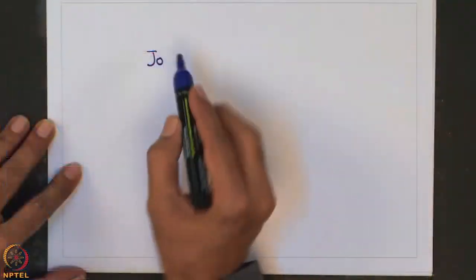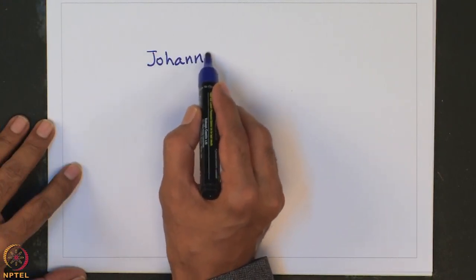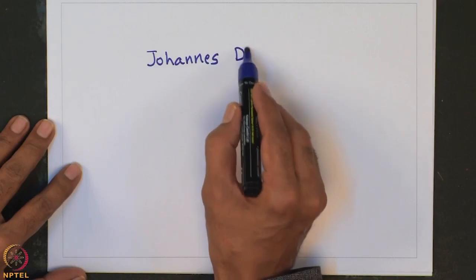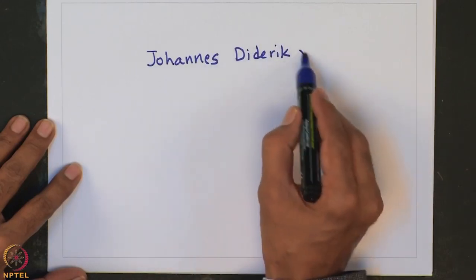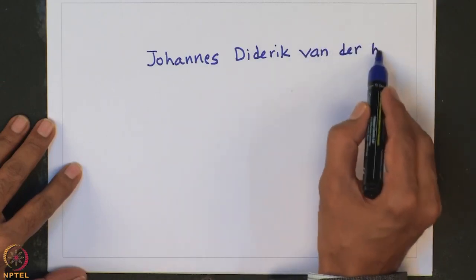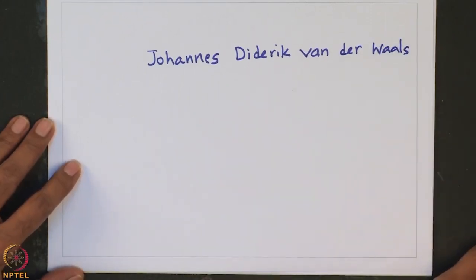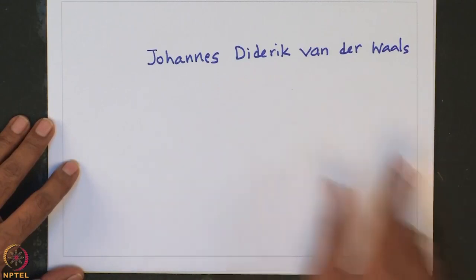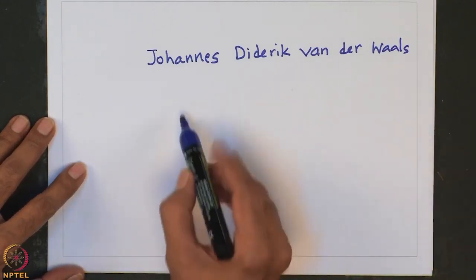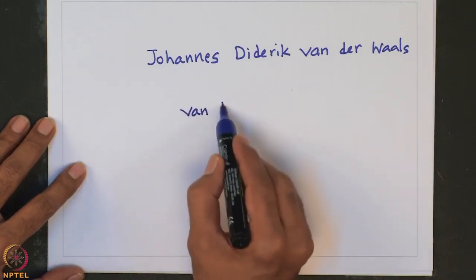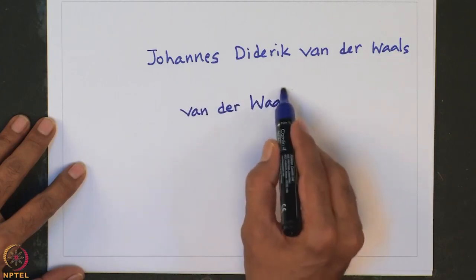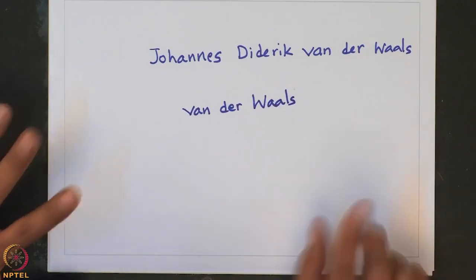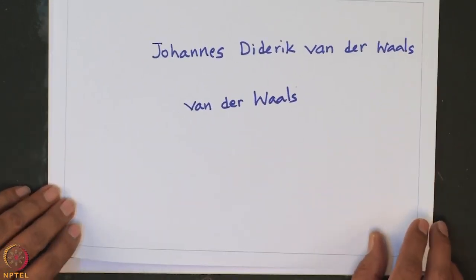When we talk about van der Waals often students make mistake in writing the name. One should remember van der Waals full name is Johannes Diderik van der Waals. When we write shortly we have to write small v and small d and capital W. One should not forget about this.